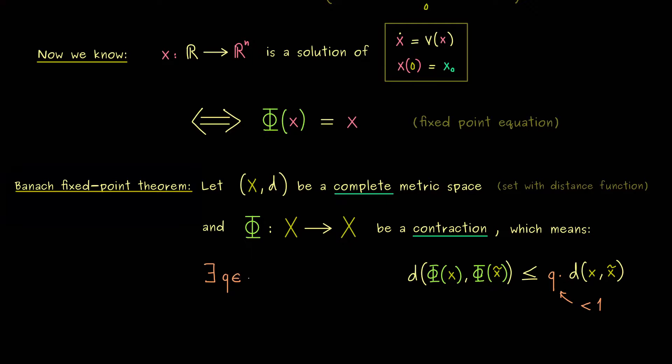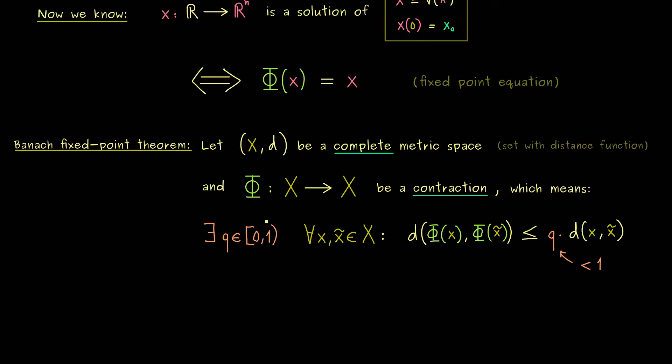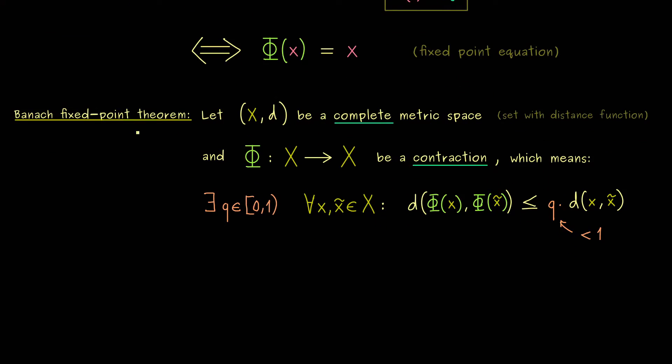More precisely, we want that we have a q between 0 and 1. But most crucially, 1 is excluded, so we don't have the case that we stay at the same distance. And we also have the very important fact that this q holds for all x and x̃ in X. In this sense, this q is a universal constant. Ok, so now this is the whole assumption we need, and now the theorem tells us that Φ has exactly one fixed point. And this unique fixed point, we can just call x*.